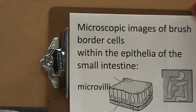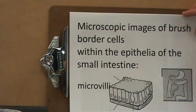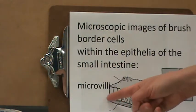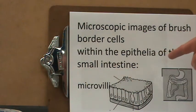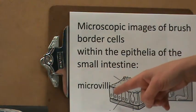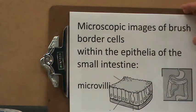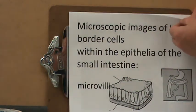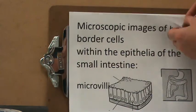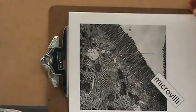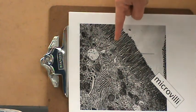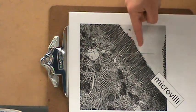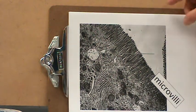Microscopic images of brush border cells within the epithelia of the small intestine. These are cells lining the intestine, and each one is an epithelial cell with microvilli. You can see it better here. The microvilli are folds of the membrane of the brush border cell — this is all one membrane folded onto itself.